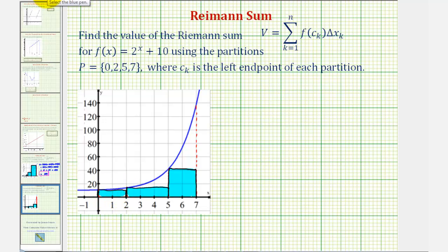Let's go ahead and set this up using function notation first. We have V = f(c) times Δx. We're using the left endpoint. We'd have f(0) times Δx, which is 2 units,